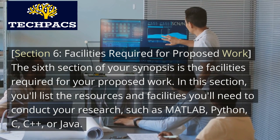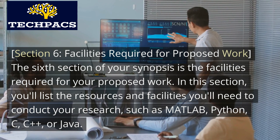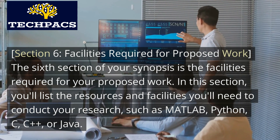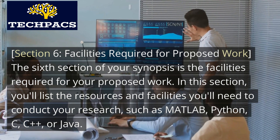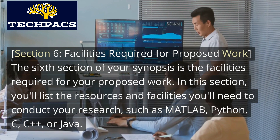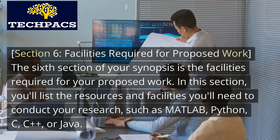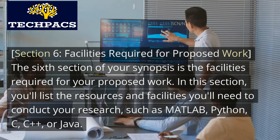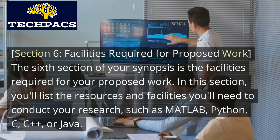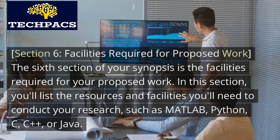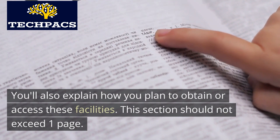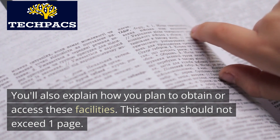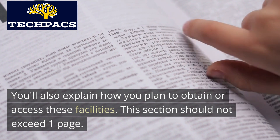Section 6: Facilities Required for Proposed Work. In this section, you'll list the resources and facilities you'll need to conduct your research, such as MATLAB, Python, C, C++, or Java. You'll also explain how you plan to obtain or access these facilities. This section should not exceed one page.